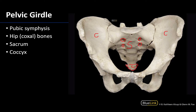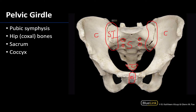The coxal bones are going to articulate anteriorly at the pubic symphysis, where the two pubic bones articulate. A symphysis is a type of cartilaginous joint, so you have a little block of cartilage which is very prominent in the anterior portion. Also on the list are the paired sacroiliac or SI joints, which is where those coxal bones are going to articulate with the sacrum.